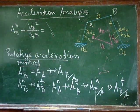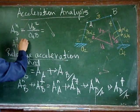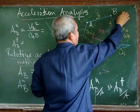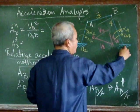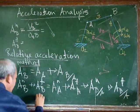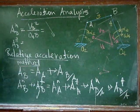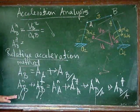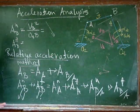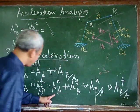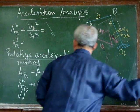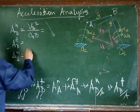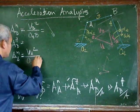The tangential acceleration of B is not known in magnitude, but we know it is along the line perpendicular to O to B, so we put a single check indicating known direction only. The normal acceleration of A is given by the velocity of A squared over the distance O to A.